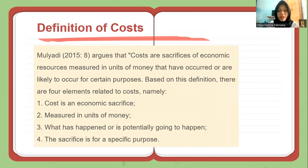The second is the definition of cost. Mulyadi argues that costs are a sacrifice of economic resources measured in units of money that have occurred or are likely to occur for certain purposes. Based on this definition, there are four elements related to cost: first, cost is an economic sacrifice; second, measured in units of money; third, what has happened or is potentially going to happen; and fourth, the sacrifice for a specific purpose.